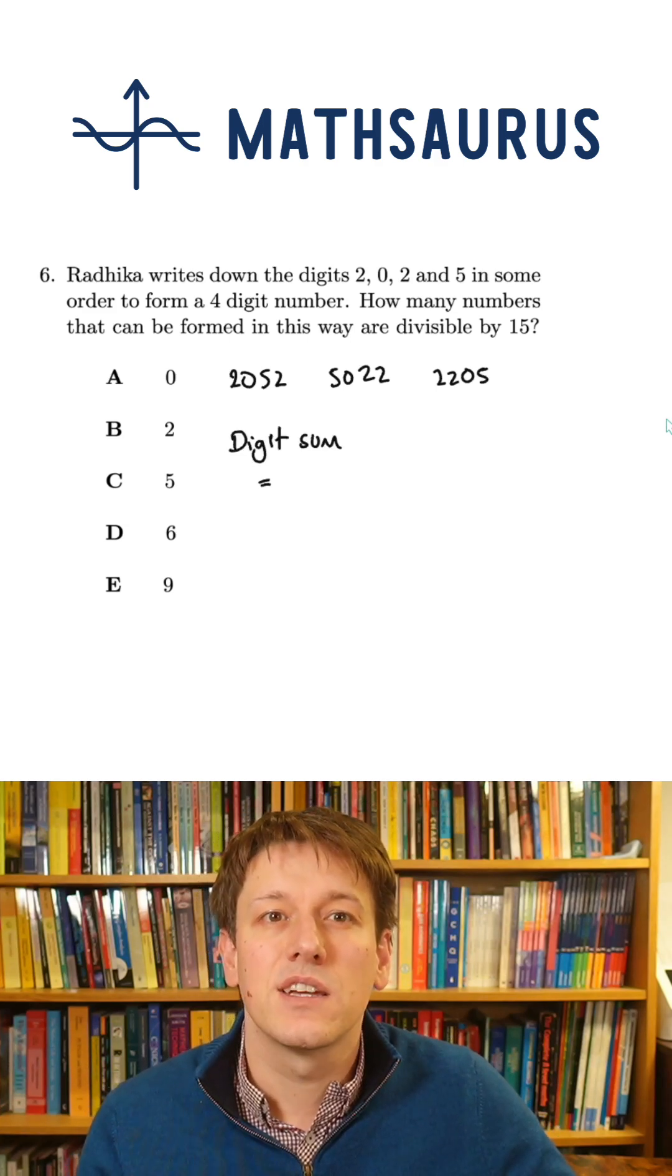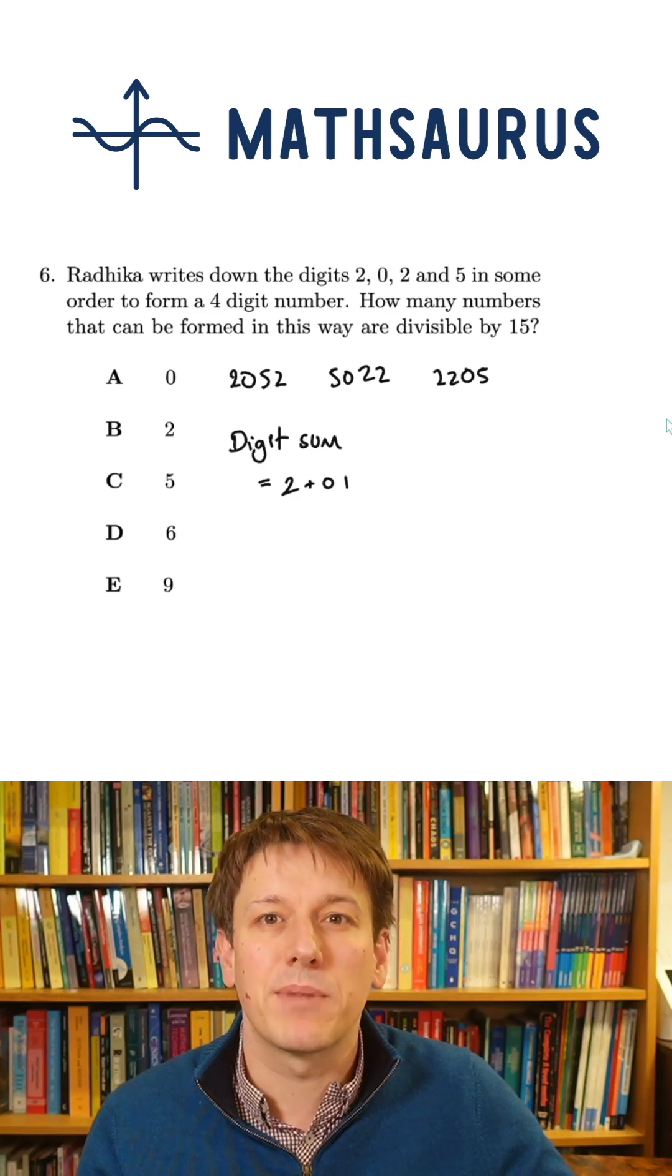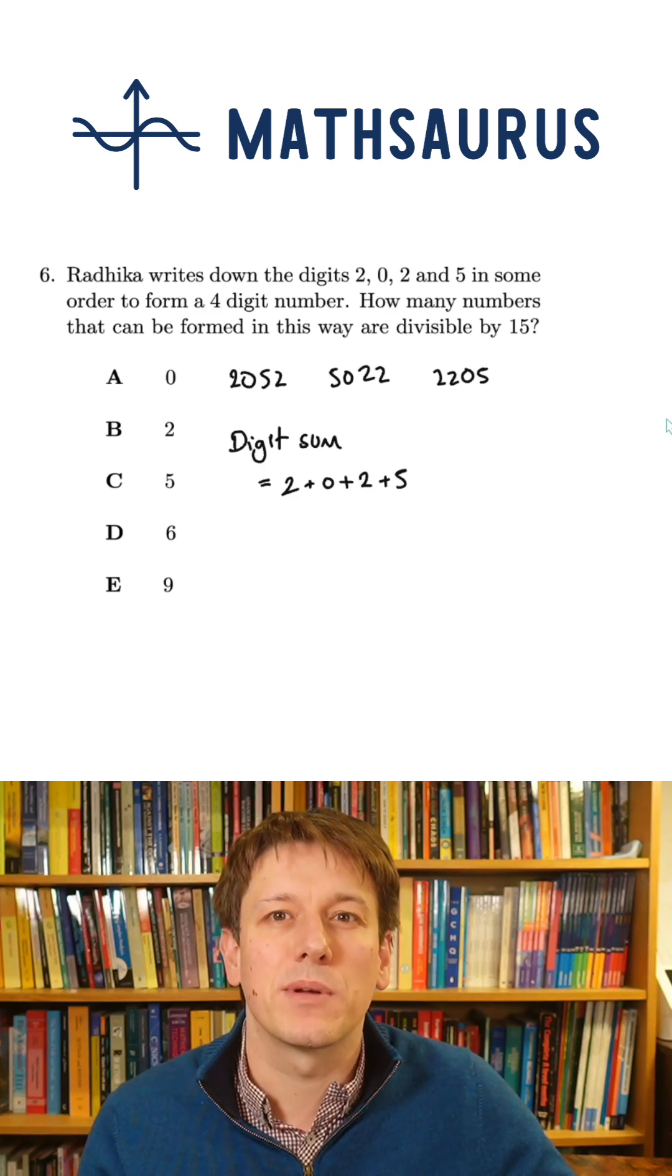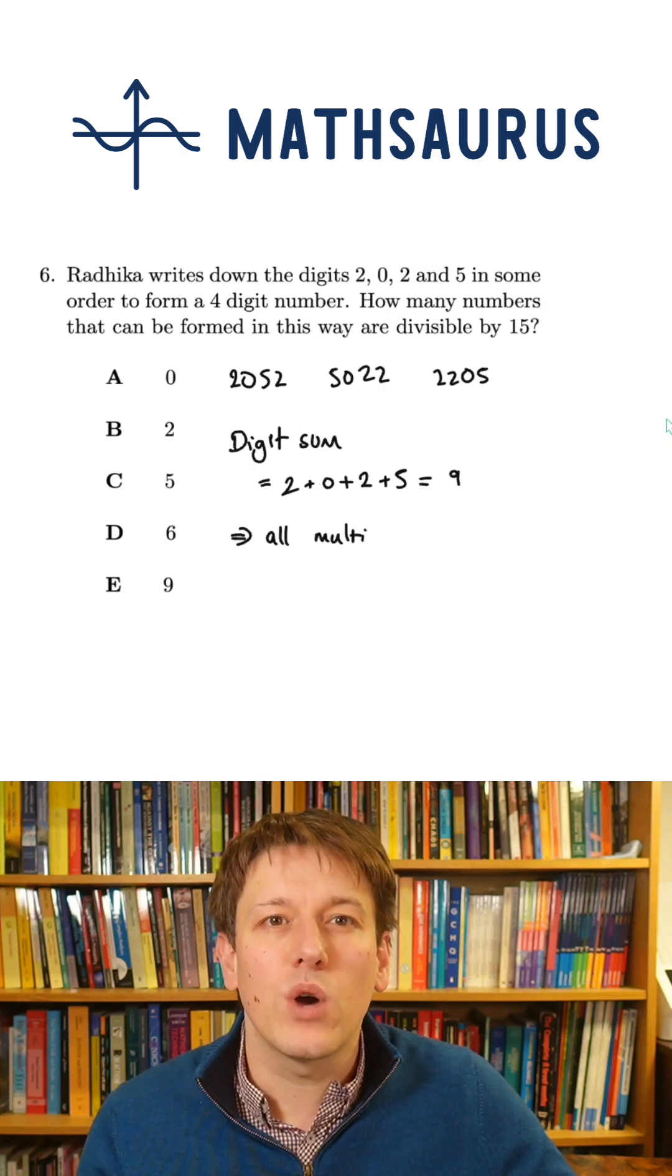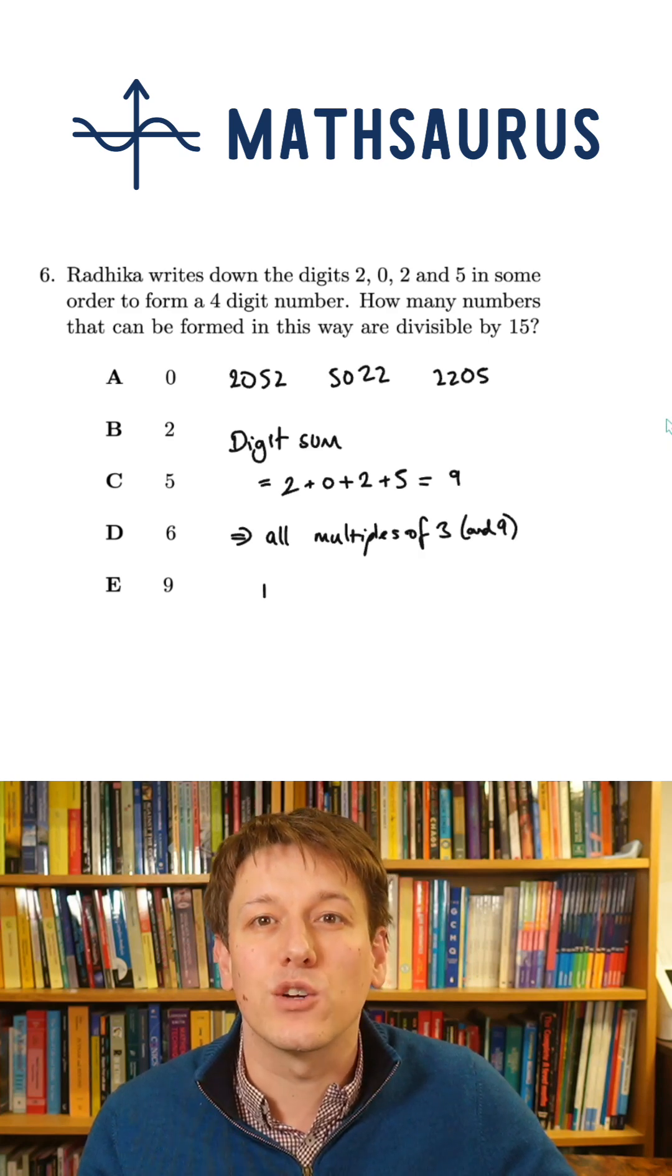So the digit sum test for divisibility by 3 and by 9 says that if I add the digits together, so here I get 2 plus 0 plus 2 plus 5, that gives me 9. That means that any number with those digits, because its digit sum is 9, that will be a multiple of 3 and actually also 9 here.